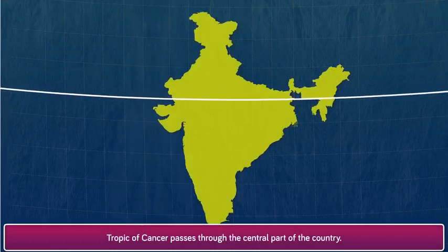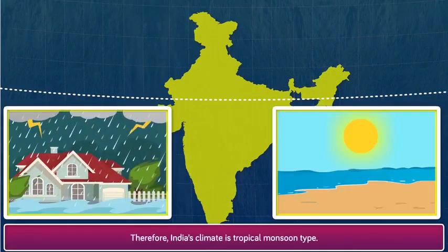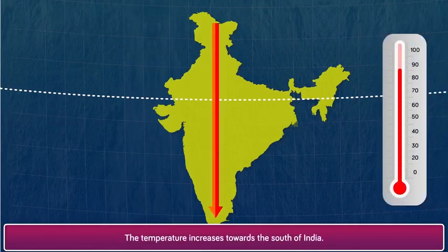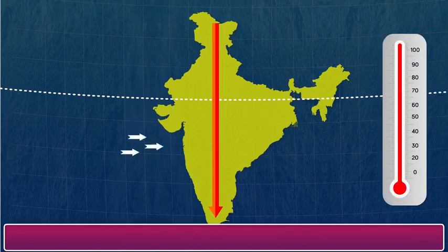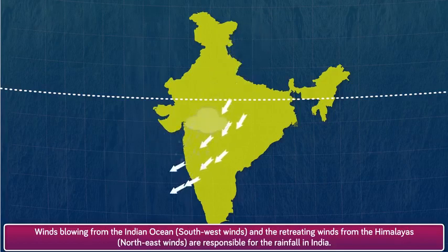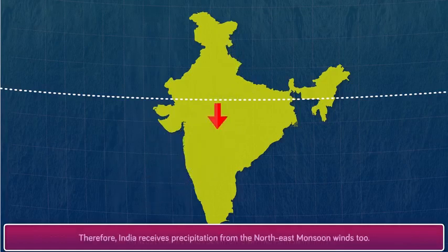Point 6: The Tropic of Cancer passes through the central part of the country. Therefore, India's climate is tropical monsoon type. The average temperatures are high throughout the year. The temperature increases towards the south of India. Winds blowing from the Indian Ocean — southwest winds — and the retreating winds from the Himalayas — northeast winds — are responsible for the rainfall in India. Therefore, India receives precipitation from the northeast monsoon winds too.